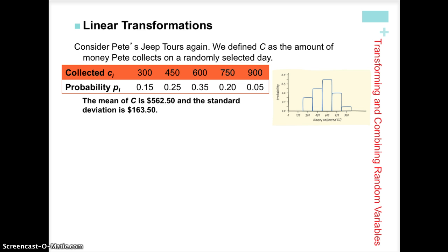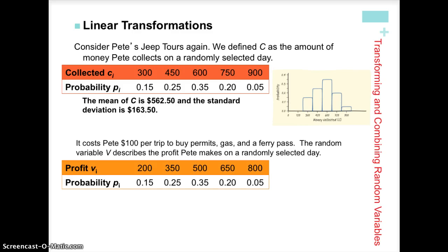Let's take a look at distribution C again — the money that Pete collects on any given day. It costs Pete $100 per trip to buy permits, gas, and a ferry pass. So we have a new random variable V describing the profit Pete makes on any randomly selected day. We're taking random variable C and subtracting a constant of $100 associated with each value. The probabilities haven't changed, and the distribution has slid to the left, decreased by $100 for each bar.